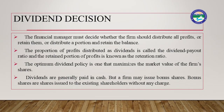The next financial decision is the dividend decision. The financial manager must decide whether the firm should distribute all profits, retain them, or distribute a portion and retain the balance. The proportion distributed as dividend is called the dividend payout ratio, and the retained proportion is the retention ratio. The optimum dividend policy maximizes the market value of the firm's shares. Dividends are generally paid in cash, but a firm may also issue bonus shares — shares issued to existing shareholders without any charge.